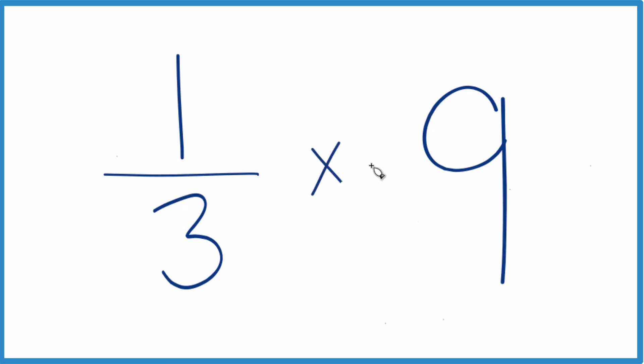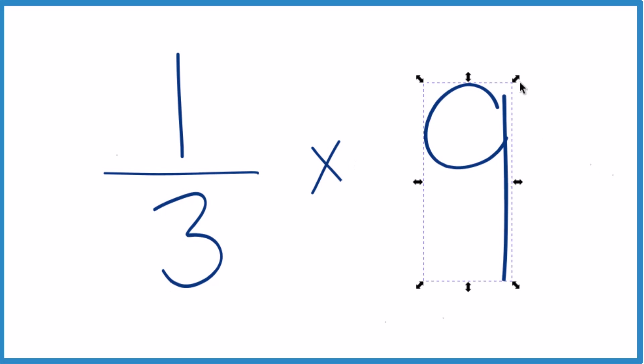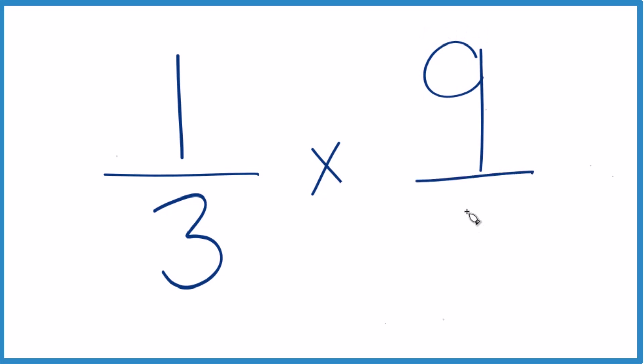So one-third times nine. So that's the same thing as one-third of nine. And let's take our nine here, shrink it down a little bit and move it up.